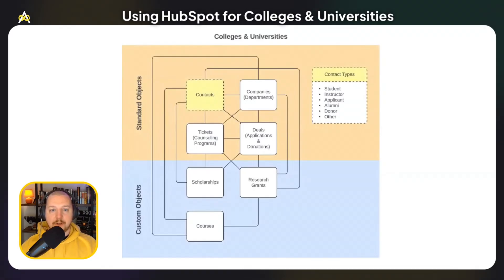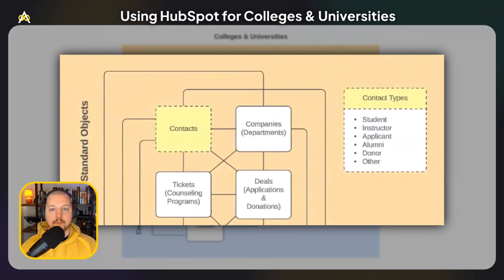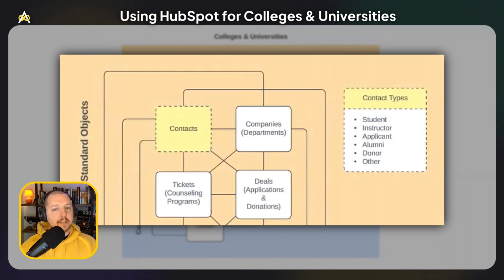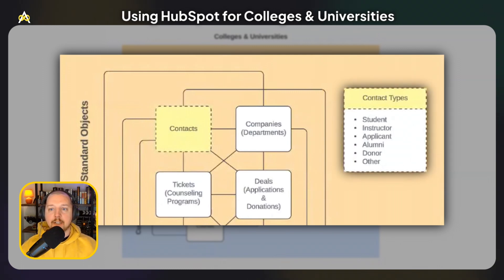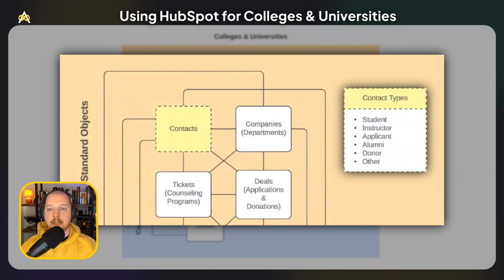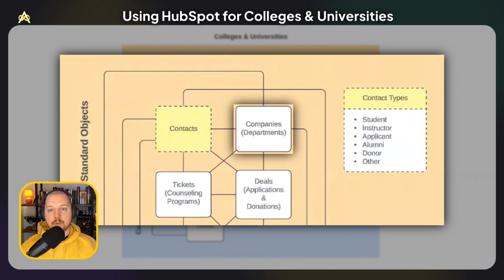If you look at this data model, we've got HubSpot's standard objects of contacts, companies, tickets, and deals. But because colleges and universities work a little bit differently, we're going to use those standard objects a little bit differently. Universities have a wide variety of different types of contacts that they would want to have in a CRM. I've created a contact types property, and that's going to track which type of contact we're looking at — whether it's a student or an instructor, a new applicant, an alumni, a donor, or any other kind of contact you might want to store. Instead of companies, which universities don't typically deal directly with, I've repurposed that object to be departments.